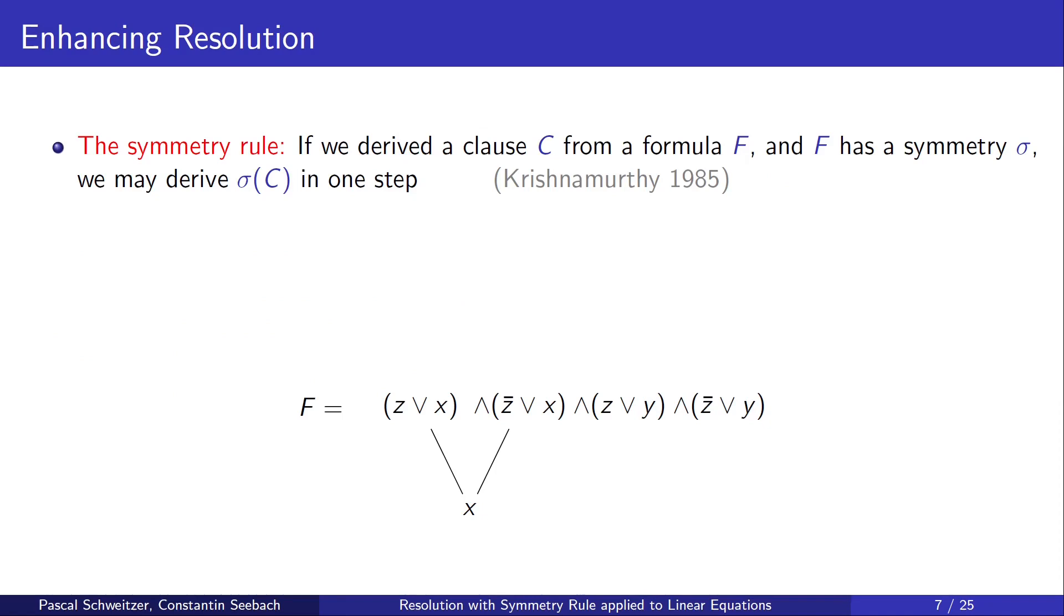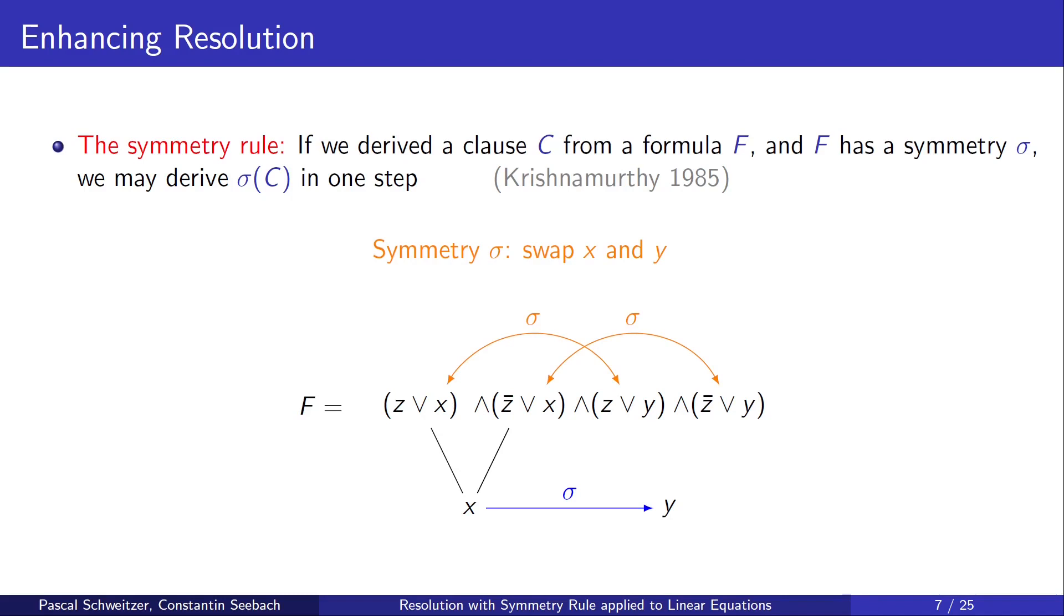So, then the idea is to enhance resolution using the so-called symmetry rule. If we derived a clause C from a formula F and F has a symmetry sigma, we may derive sigma of C in one step. Here's an example. We have a formula F and we derived the clause X using resolution. We observe that swapping X and Y in this formula is a symmetry. Because doing so simply swaps the first with the third clause and the second with the fourth. So, we can apply the symmetry rule to immediately derive Y from X. Note that we could also have derived Y using resolution.